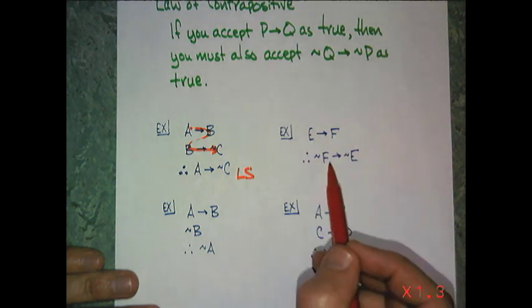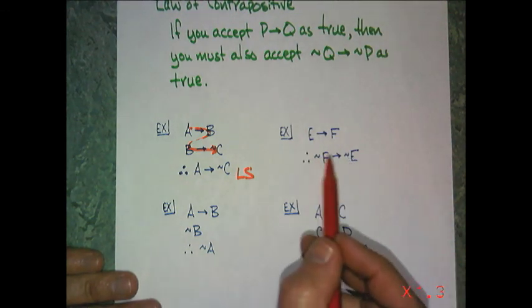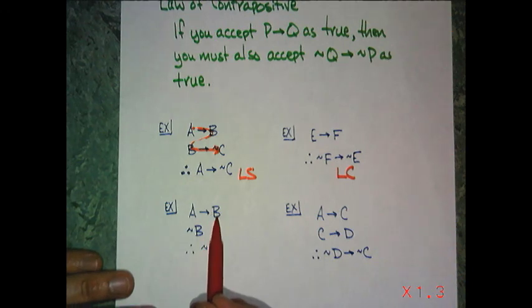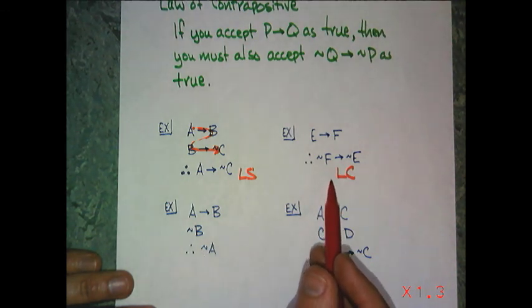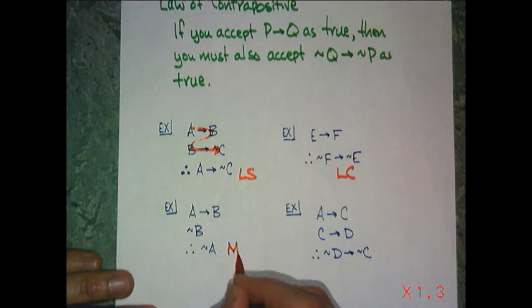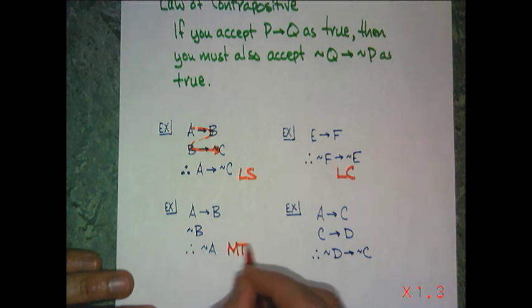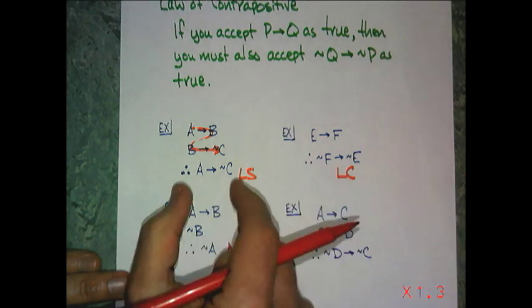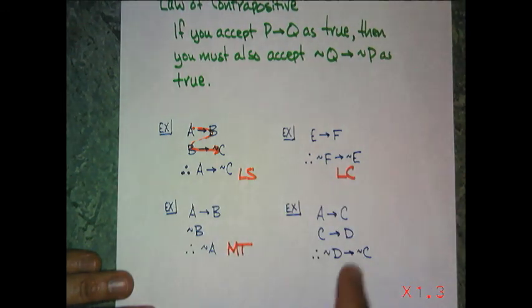E then F, not F then E. That's changed the order, negated both. That is law of contrapositive. A then B, and it's not B, therefore not A. Even though that looks similar to this one, it's not the same. This is from last time. This one is modus tollens. Different. Notice that syllogism and contrapositive both end with a conditional statement.